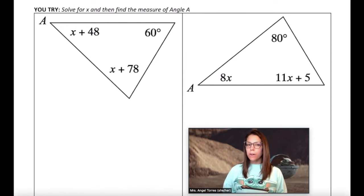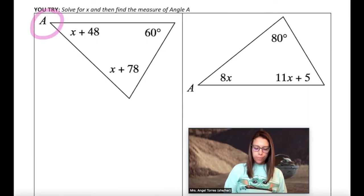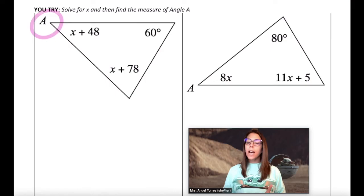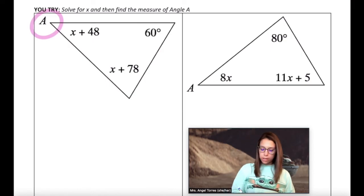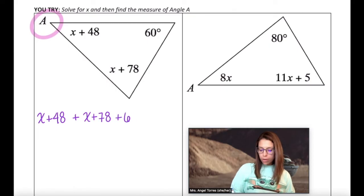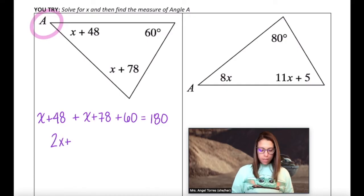Now something a little bit tougher. Solve for x and find the measure of angle A. Since we know that all three angles of a triangle add up to 180 degrees, I'm going to start with my equation. My one angle A plus the measure of my second angle plus the measure of my third angle I'll add up to 180 degrees. Now I'll solve. Combine like terms. That's 2x and then 48 plus 78 plus 60 is 186.